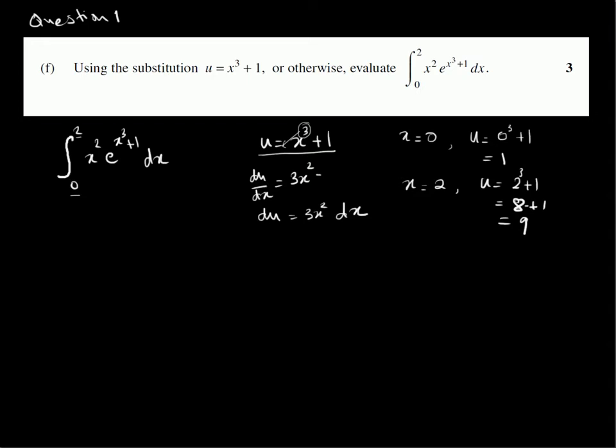If I take a third of both sides, if I take 1 third of du, I get x squared dx, which conveniently happens to be this part of the equation here.